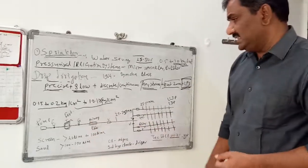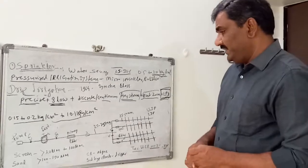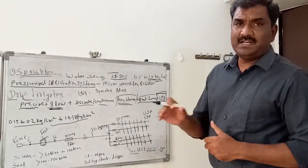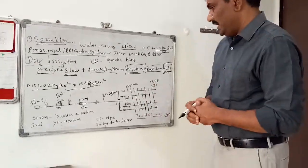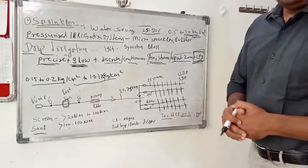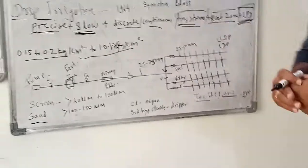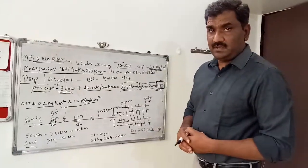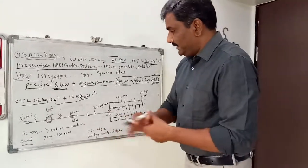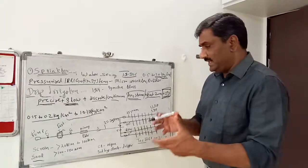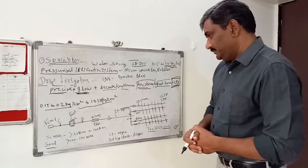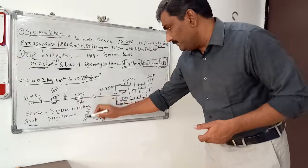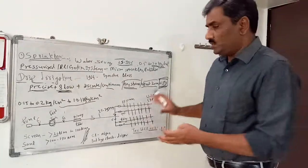There are two types of filters: screen filter and sand filter. A screen filter has a mesh of 100 to 200 mesh and can remove suspended particles of 20 to 100 micrometers. Sand filter is more efficient — it can remove suspended particles of around 100 to 150 micrometers and requires less maintenance than a screen filter, though screen filters clog more easily and need back-flushing. Both filters need to be cleared every 15 to 30 days by back-flushing.